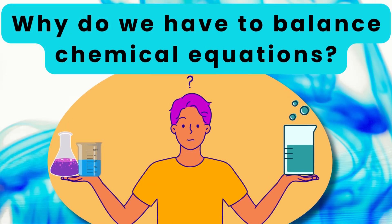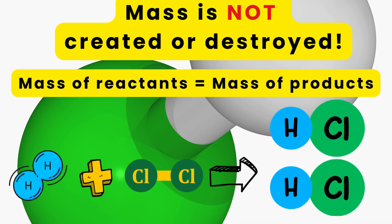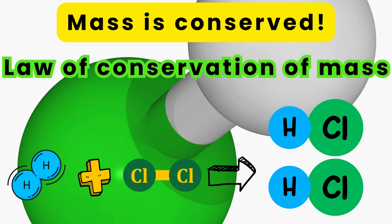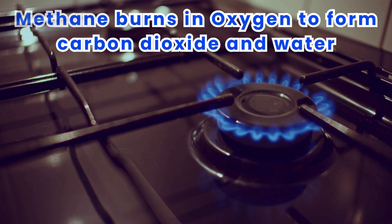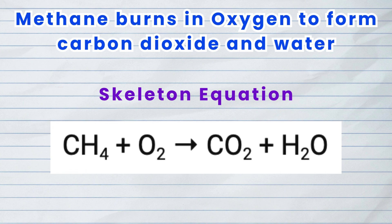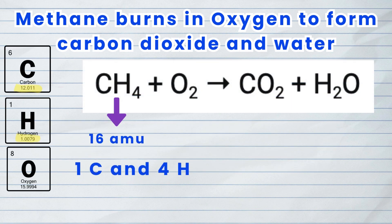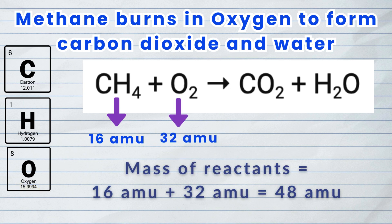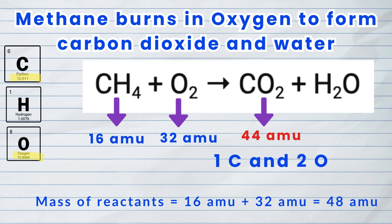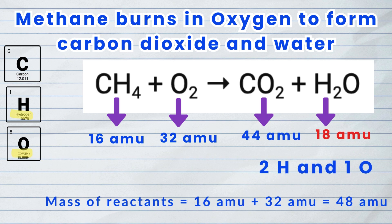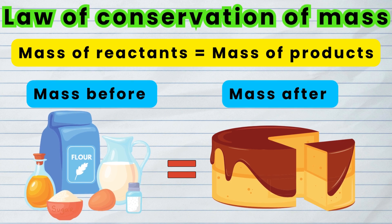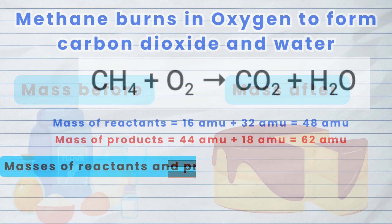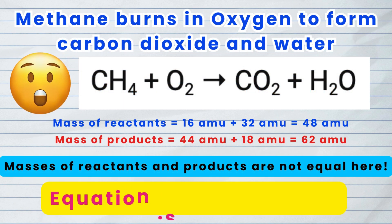Why do we have to balance chemical equations? In a chemical reaction, mass is neither created nor destroyed — it is conserved. This is called the law of conservation of mass. Let us look at this chemical reaction: methane burns in oxygen to form carbon dioxide and water: CH4 plus O2 gives CO2 plus H2O. The mass of the reactants equals 12 plus 4 AMU for methane plus 32 AMU for O2, a total of 48 AMU. The mass of the products is 12 plus 32 AMU for carbon dioxide and 2 plus 16 AMU for water, which equals 62 AMU. According to the law of conservation of mass, the mass of the reactants should equal the mass of the products. Here the masses are not equal, which means this is an unbalanced equation.